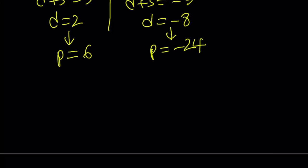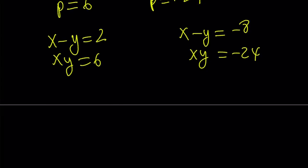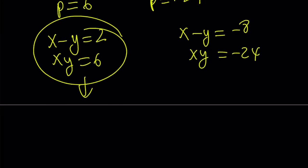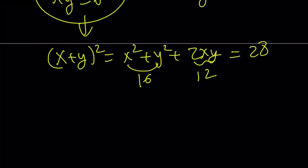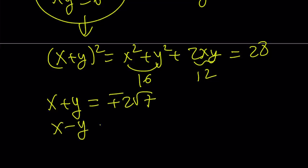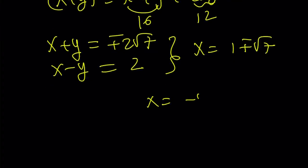So that gives us the following systems: x minus y equals 2 and xy equals 6, or x minus y is negative 8 and xy is negative 24. From here you can manipulate in so many ways. You can write x plus y squared as x squared plus y squared plus 2xy. I know that this is equal to 16, and I know that xy is 6, so this is going to be equal to 12, and the sum is going to be 28. From here, if you take the square roots, x plus y is going to be plus or minus 2 root 7, along with x minus y equals 2, you're going to get the same solutions as before: x is going to be 1 plus or minus root 7. If you use the other two equations, you're going to get negative 4 plus or minus 2 root 2i, and that's going to be it for the solutions.